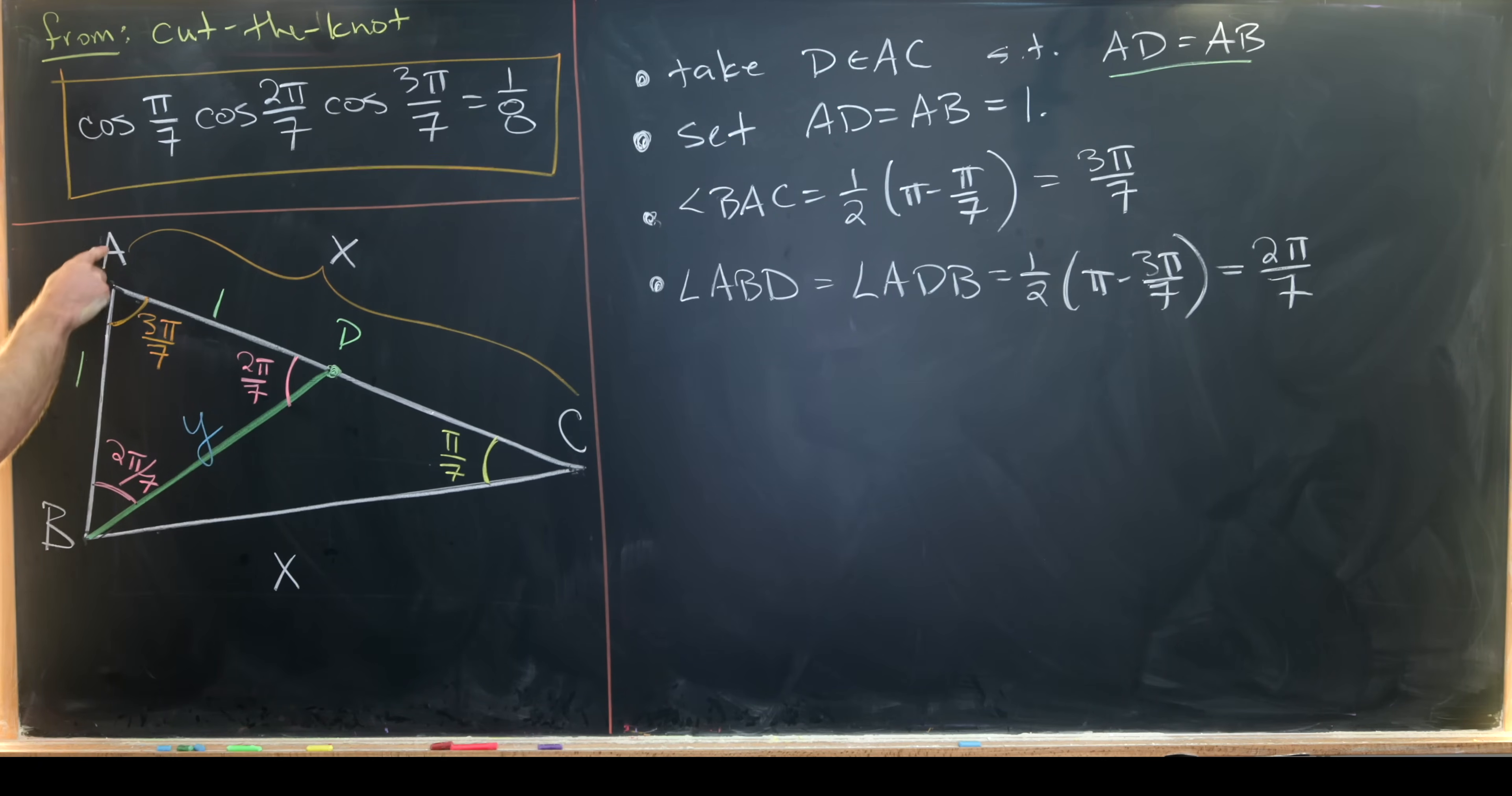But notice that ABC is 3 pi over 7. ABD we just measured to be 2 pi over 7. That tells us that this leftover bit is also pi over 7. So let's put that pi over 7 right here. But now with all of these measurements we see that we have three isosceles triangles. ABD is isosceles. ABC is isosceles by our original assumption. And then finally BDC is also isosceles.